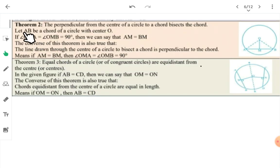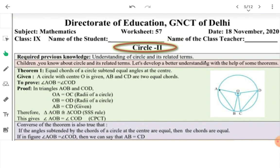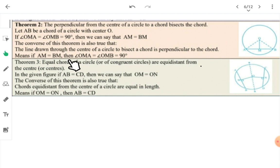We have done the most important theorem. Now let's look at theorem number 2. We learned theorem 1's proof, which is important and comes in your exams. Theorem 2 we are doing without proof, just taking the statement. The perpendicular from the center of a circle bisects the chord.